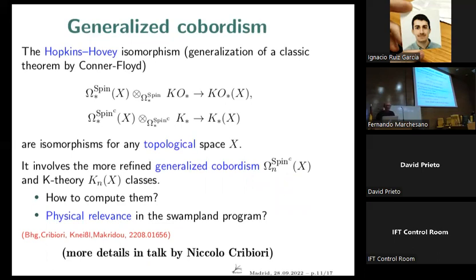These generalizations of cobordisms with a chosen background X generalize via what is known as the Conner-Floyd theory in mathematics. You can define an isomorphism from X-valued spin cobordism groups to KO or K-theory groups on X, which classifies D-branes wrapping certain cycles on X — that is their physical significance. We can ask how to compute these generalized cobordism groups and what their physical relevance is in this program. We addressed this question in a recent paper from August, which is the content of Niccolò's talk.